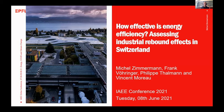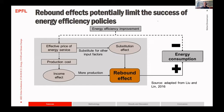This is joint work by Frank Furringer, Philip Talman, Verso Moro, and myself. Let's first address what rebound effects actually are. In theory, an energy efficiency improvement would decrease the energy use by whoever is receiving it, whether households or firms.